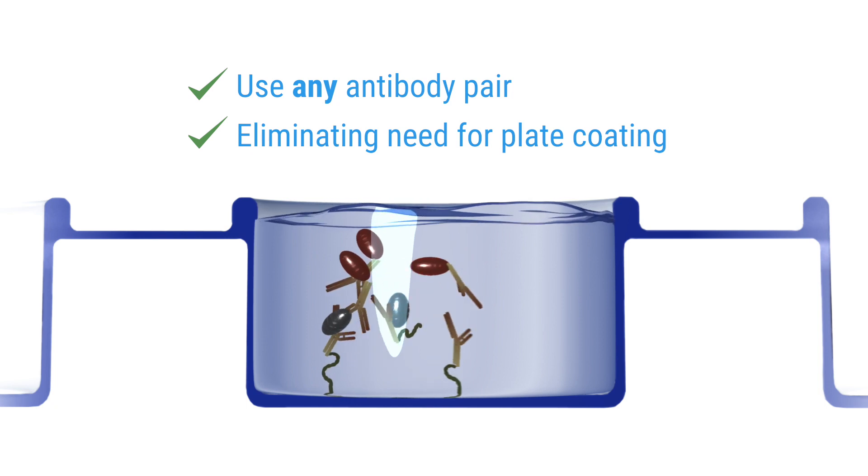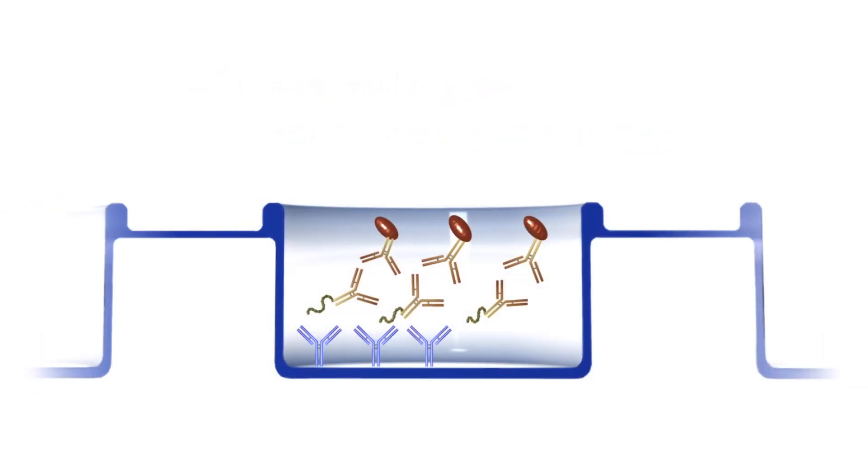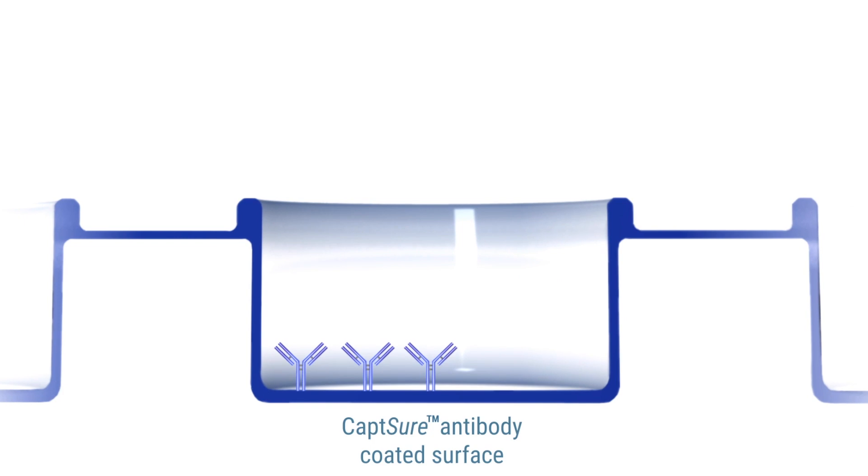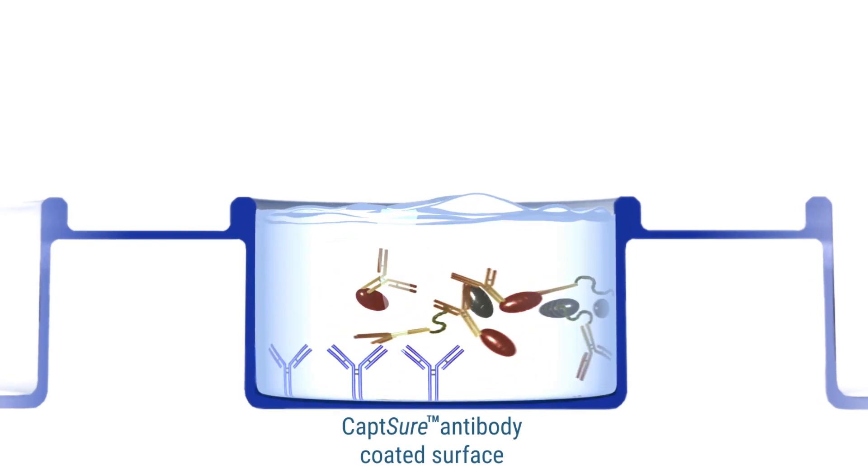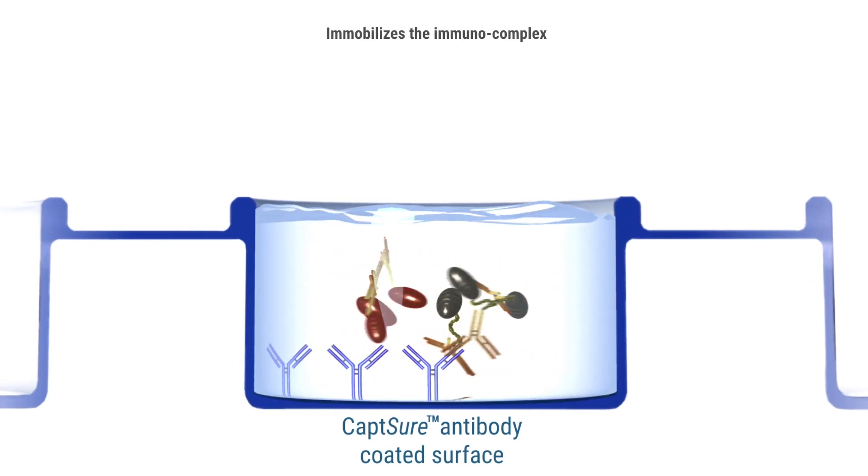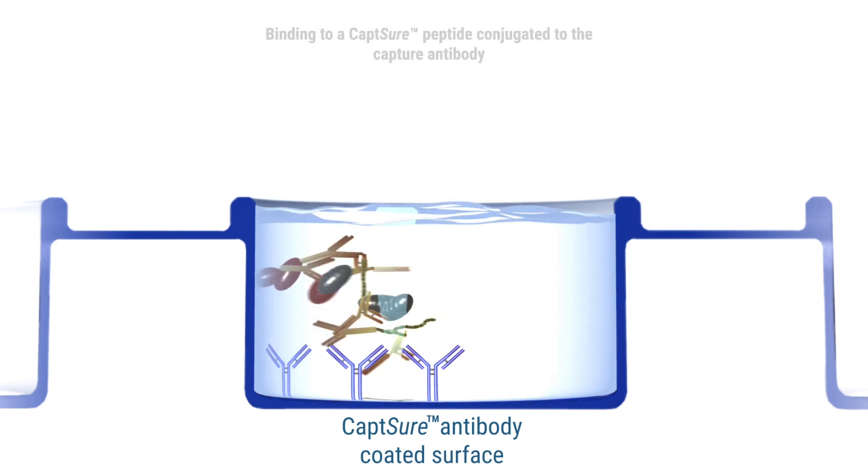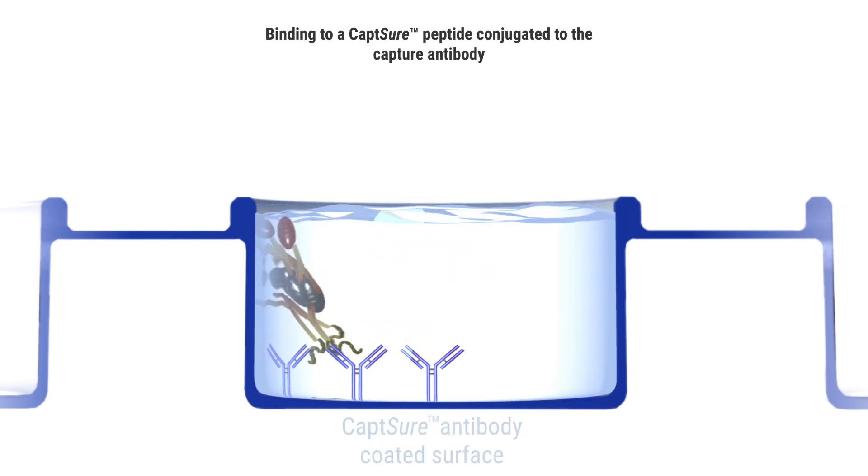CaptSure DIY ELISA kits provide ready-to-go assay plates pre-coated with our proprietary Capture antibody, which immobilizes the immunocomplex out of solution by binding the Capture peptide conjugated to the Capture antibody of your choice.